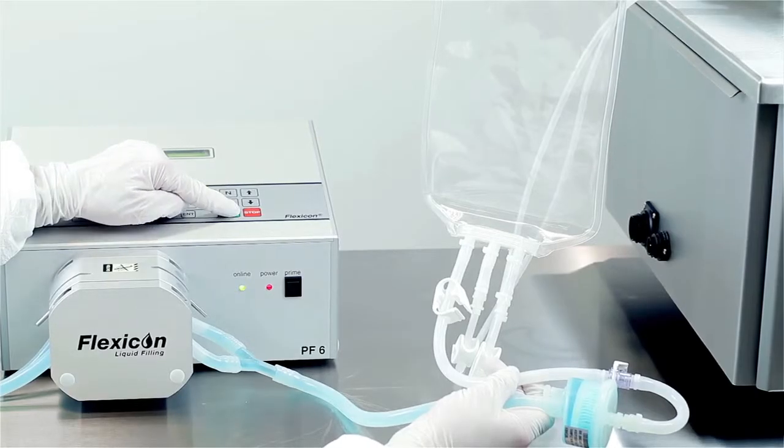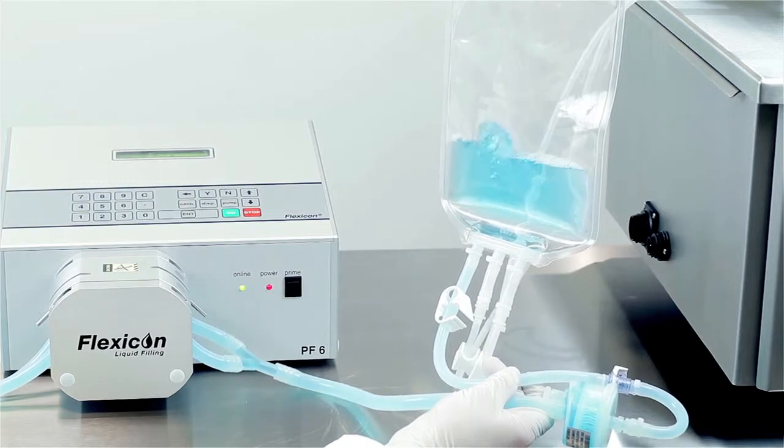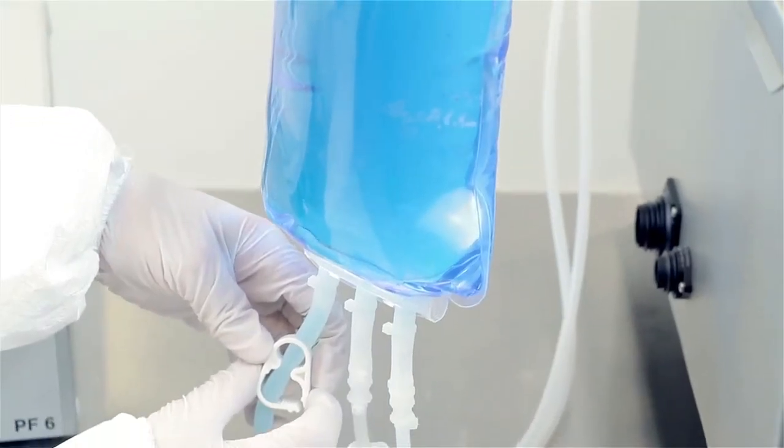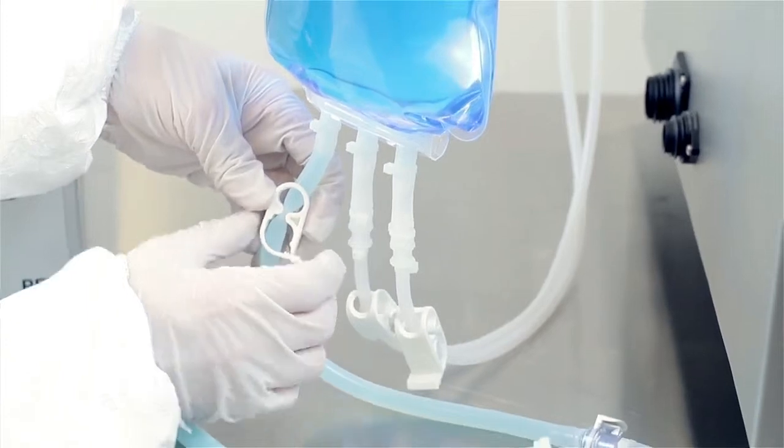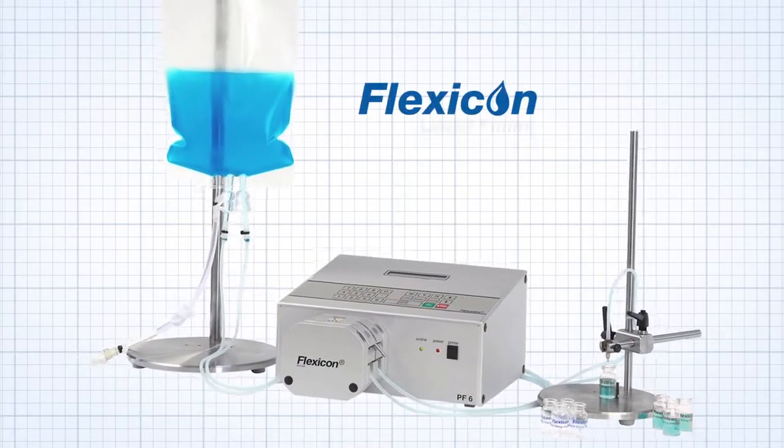The PF6 has been optimized to work with AccuSyl Platinum cured silicone tubing. This type of tubing delivers accurate dispensing and is an important part of the total filling solution ensuring that costly overfilling is prevented.